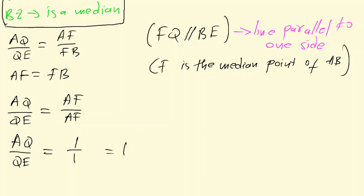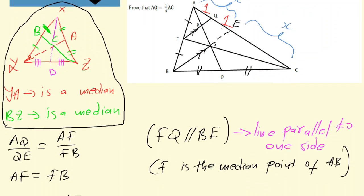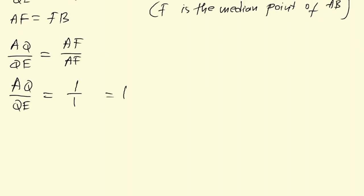Let's go back to the diagram and put this information down so we don't confuse ourselves. AQ equals one and QE equals one. Now, because point E is a midpoint, it divides AC such that AE equals EC — it's a median, at the midpoint of line AC, so it divides it into two equal segments. Therefore AE equals EC. The reason: E is the midpoint of AC, or E is the median of AC.